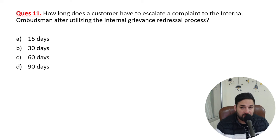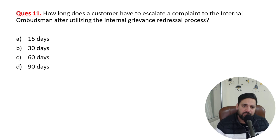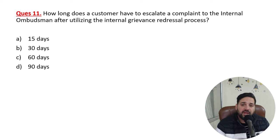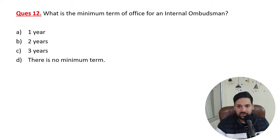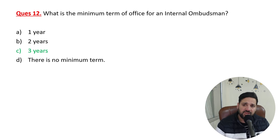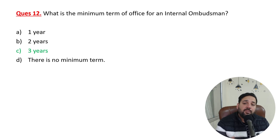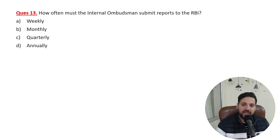How long does a customer have to escalate a complaint to the Internal Ombudsman after utilizing the internal grievance redressal process? If a problem with a bank or NBFC has not been solved within 30 days, you go to the Internal Ombudsman. The minimum term of office of an Internal Ombudsman is three years, and the ombudsman can be reappointed for one additional term maximum.